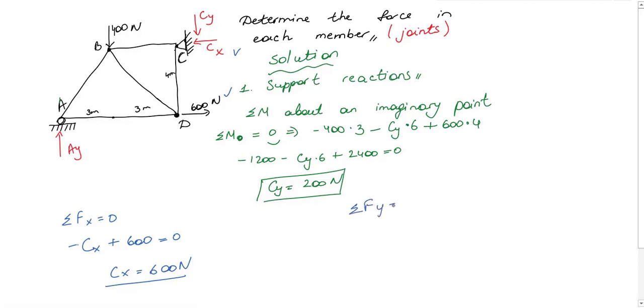Last, write equilibrium equation for y direction. We have three forces in total and we have only one unknown here: Ay minus Cy minus 400 Newton. If I substitute Cy into this equation, I will get Ay as 600 Newton. So we found all reactions here. Now let's move on to the joints.